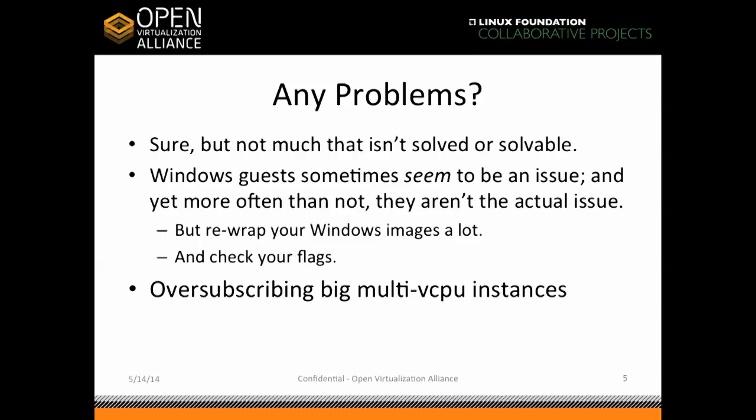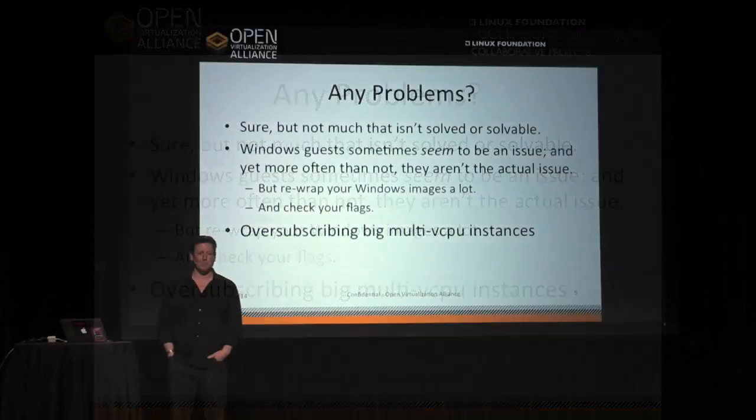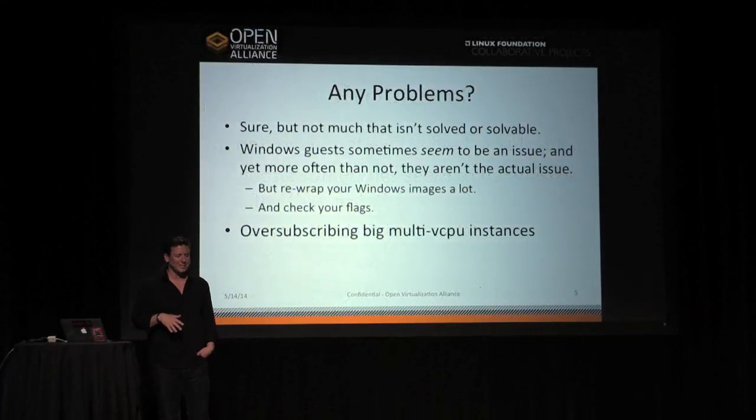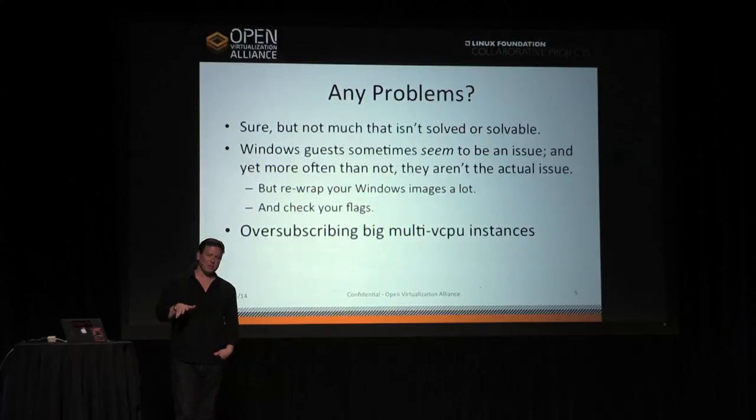This is the problem slide. Everybody has problems when deploying any technology, but there isn't much that hasn't either been solved at this point or isn't solvable. I put Windows guests on here because they seem to be the most problematic, and yet in our experience, almost everything we've encountered hasn't been a fundamental problem with the virtualization itself, and it's all been solvable.